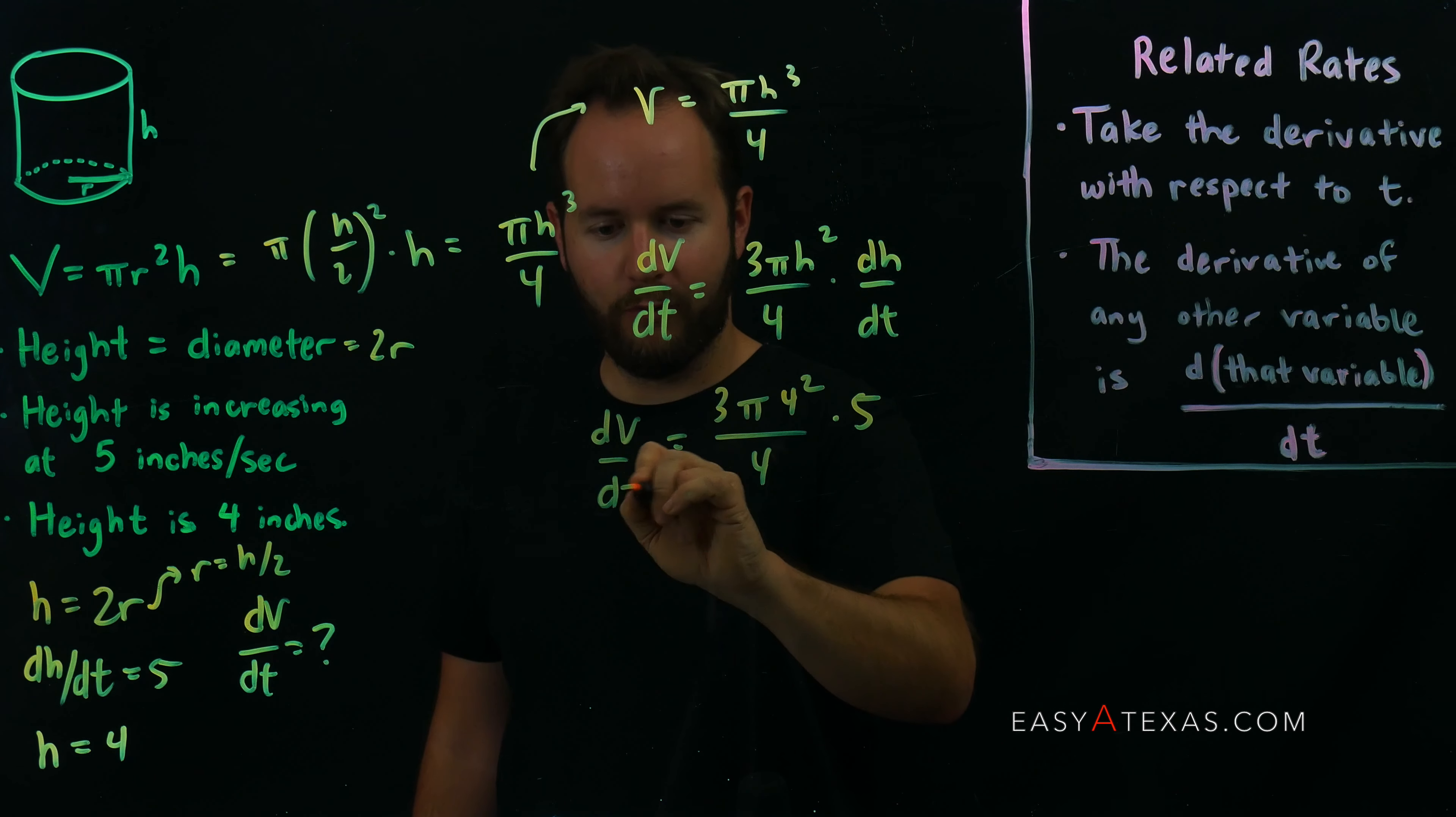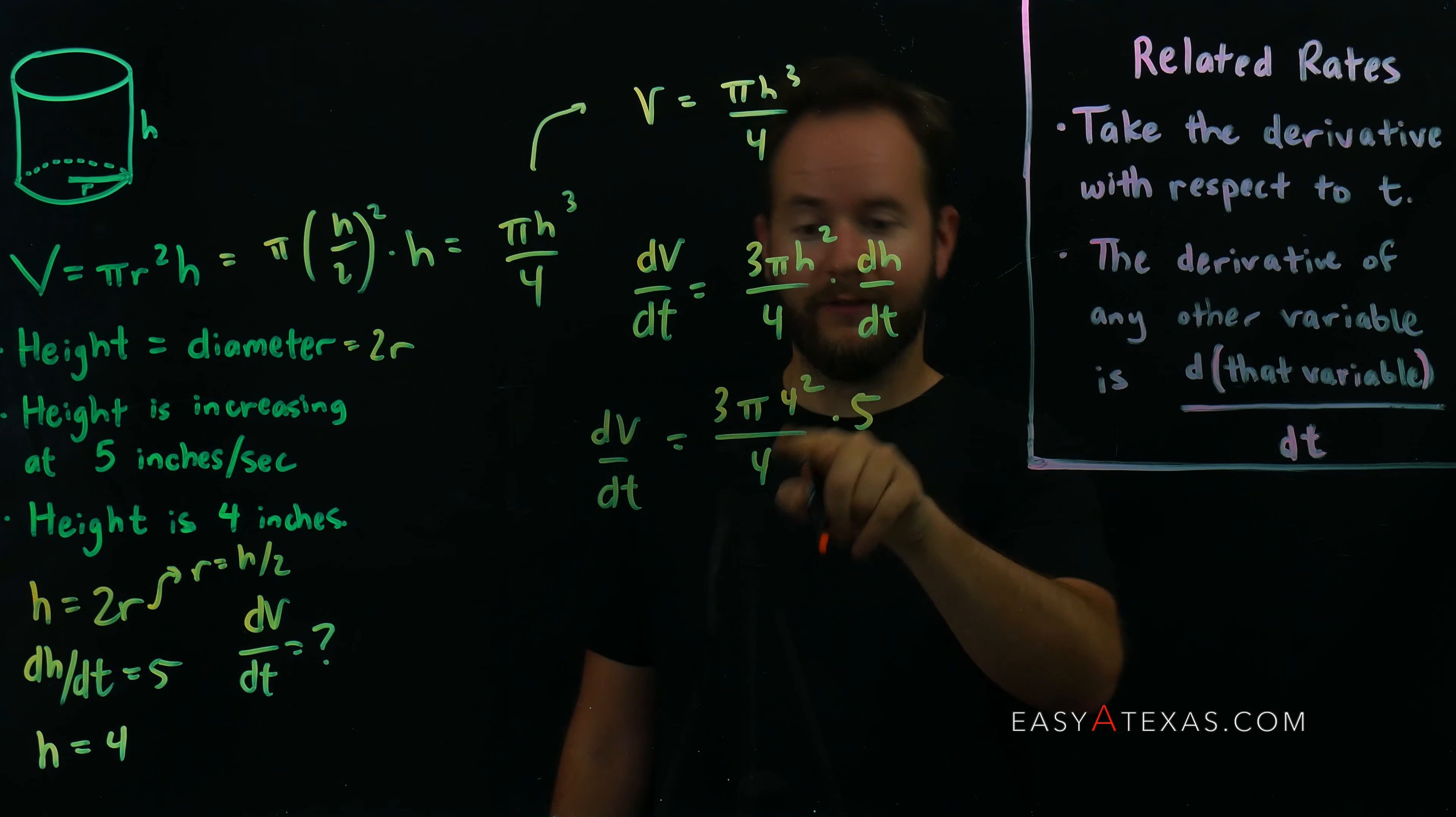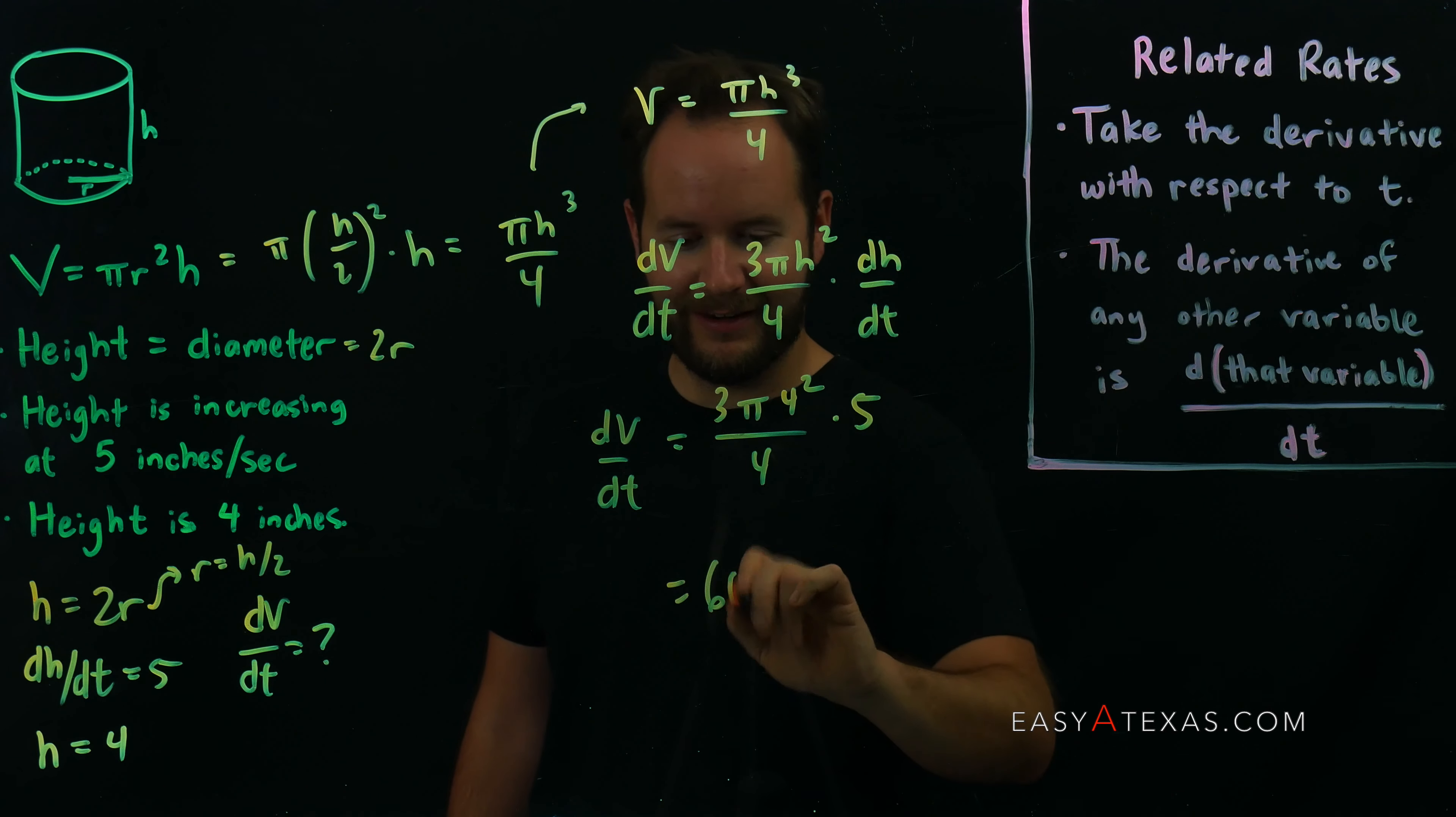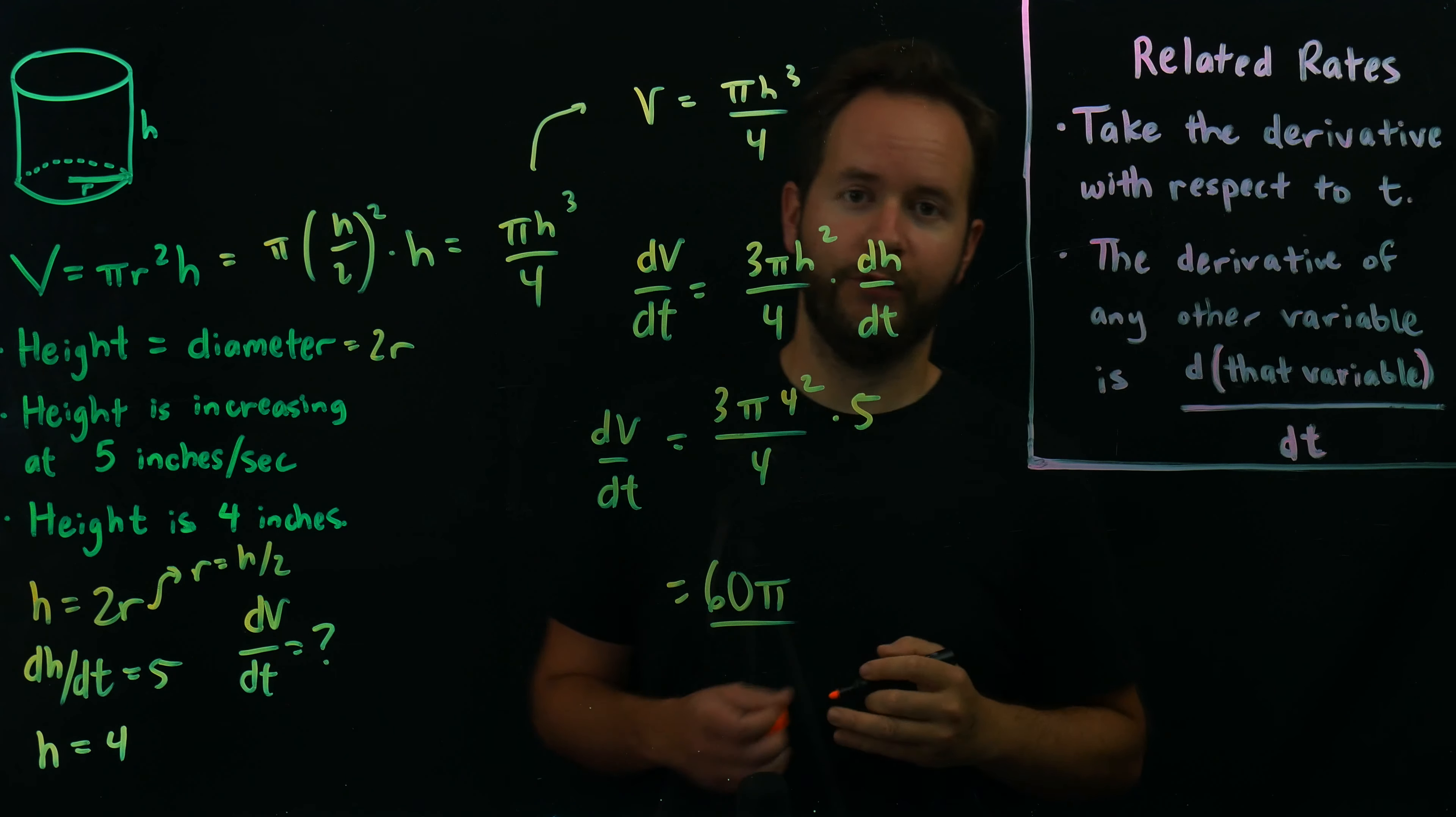Okay, a little bit more cleanup here. 4 squared is 16, divided by 4 is 4, times 3 pi is 12 pi, times 5 is 60 pi. And that makes for your final answer.